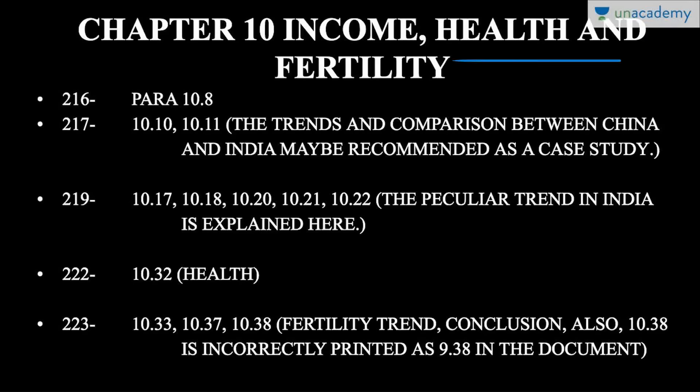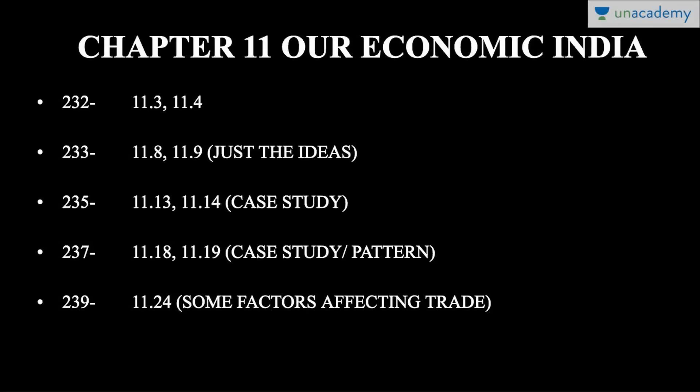We have already covered chapter ten on income, health, and fertility in the last lesson. That included paragraphs 10.8, 10.10, 10.11, the China-India trends comparison, and on page 219 paragraphs 10.17, 10.18, 10.20, 10.21, 10.22. On page 222, paragraph 10.32, and on page 223, paragraphs 10.33, 10.37, and 10.38 — these are the major things to read in chapter ten.